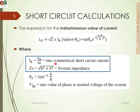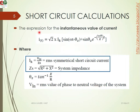IK is equal to the RMS symmetrical short circuit current, which is equal to VLN divided by Z, where Z equals √(R² + X²). The angle θz is equal to tan⁻¹(X/R). VLN is the RMS value of the phase-to-neutral voltage of the system.